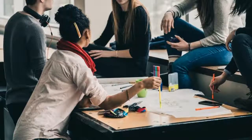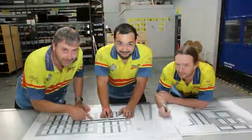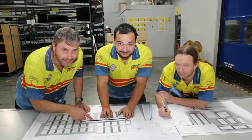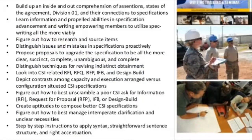Members will learn how to research and source products, identify issues and errors in specifications, and proactively propose recommendations to enhance specifications to be more clear, concise, complete, and unambiguous. They will also learn methods for revising unclear procurement language and related CSI RFI, RFQ, RFP, IFP, and design-build documents.